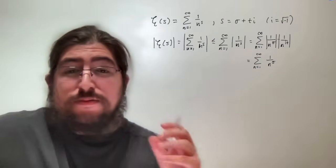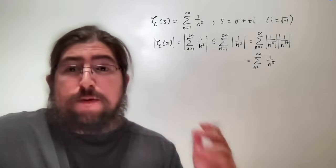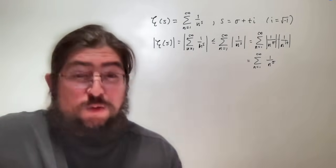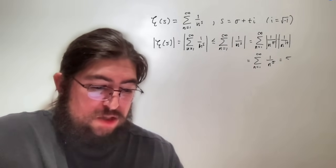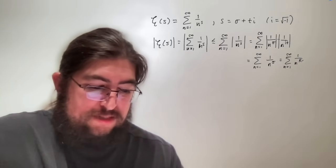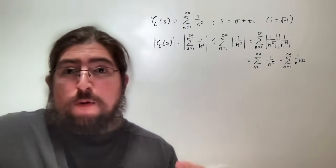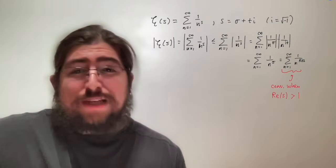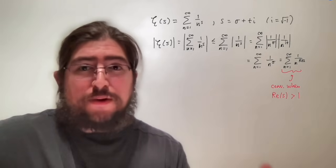Since n is positive, any positive number to any real power is also positive, so we can drop the absolute values. The n to the i·t term disappears since its absolute value is 1. Sigma is the real part of s, so what remains is 1 over n to the sigma. By p-series, this only converges when sigma — the real part of s — is bigger than 1. So zeta as defined only converges when the real part of s is greater than 1.